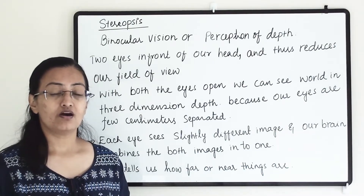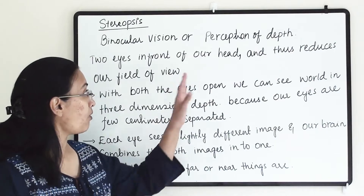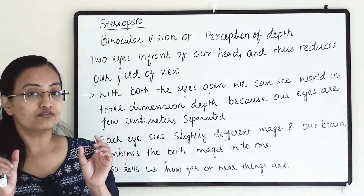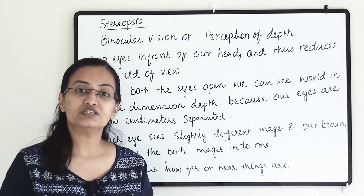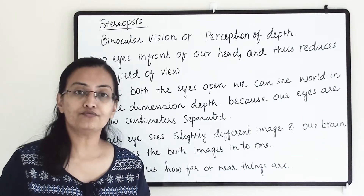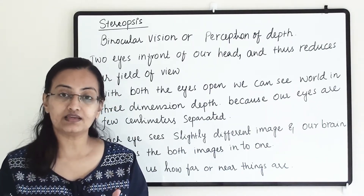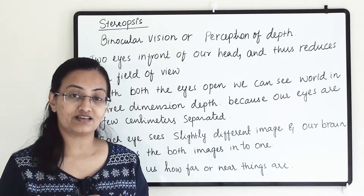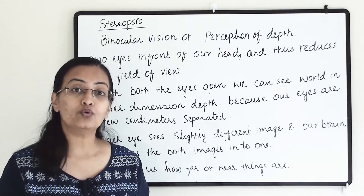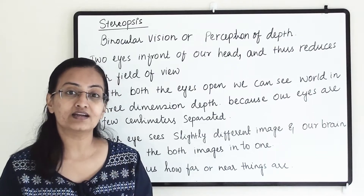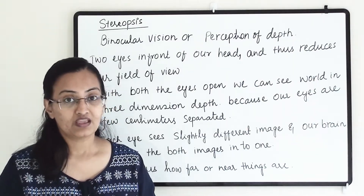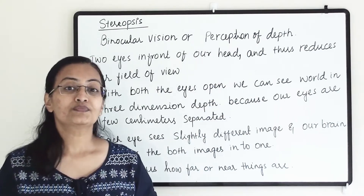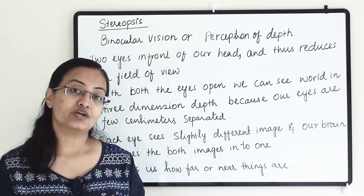Stereopsis is binocular vision, or the perception of depth, because our two eyes are located a little bit far from each other — a few centimeters apart. When we close one eye we see a limited view and our world appears two-dimensional, but when we open both eyes our world becomes three-dimensional and we are able to perceive depth. This condition is known as stereopsis.